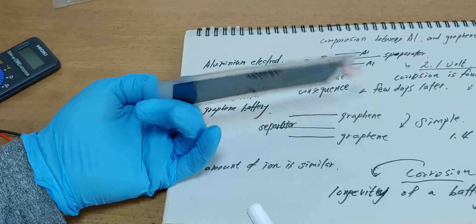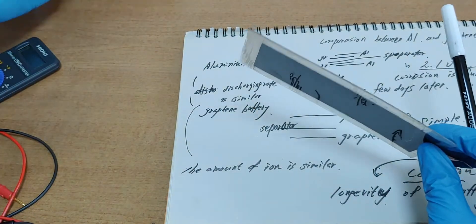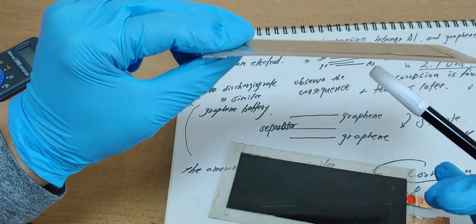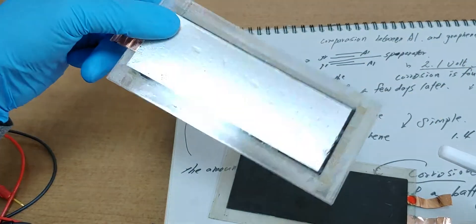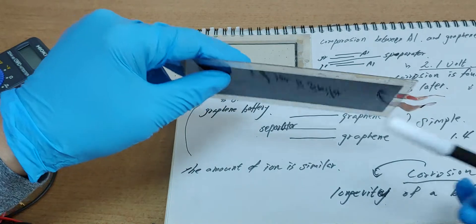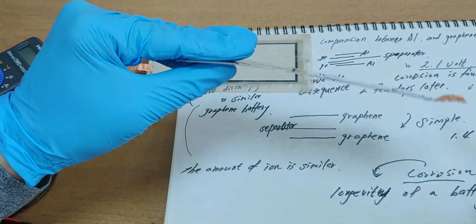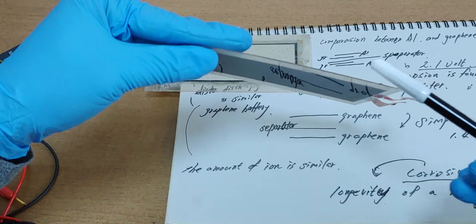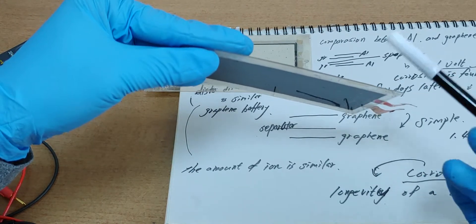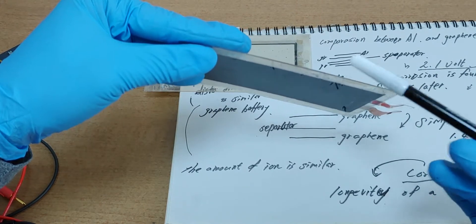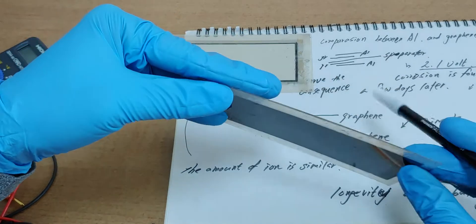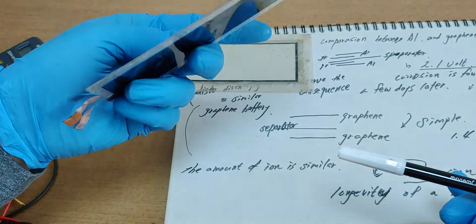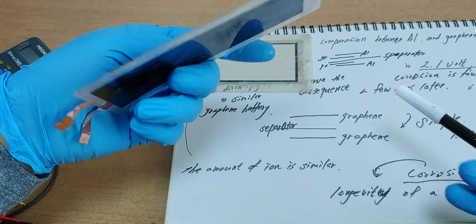I think using metals is worse than using graphene. Maybe this can be a capacitor or a supercapacitor, but it can be a battery too.